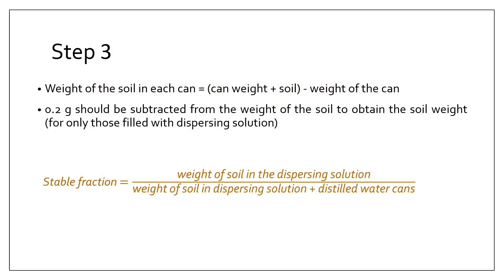Step 3, the last step: Here the weight of the soil in each can is determined by weighing the can plus soil and subtracting the weight of the can. But in the cans which were filled with dispersing solution, there will be 0.2 gram of the dispersing solute along with the soil. Therefore, 0.2 grams should be subtracted from the weight of the soil to obtain the soil weight.